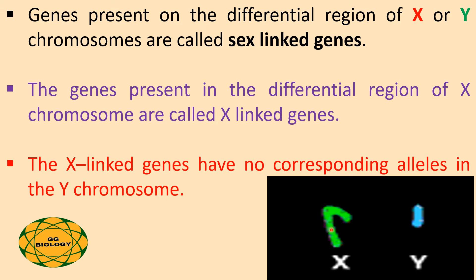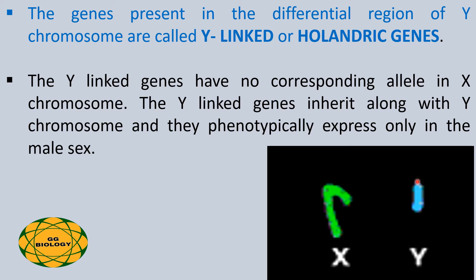The genes present on the differential region of the X chromosome or the Y chromosome are called sex-linked genes. The genes present in the differential region of the X chromosome alone are called X-linked genes, and the X-linked genes have no corresponding alleles in the Y chromosome.